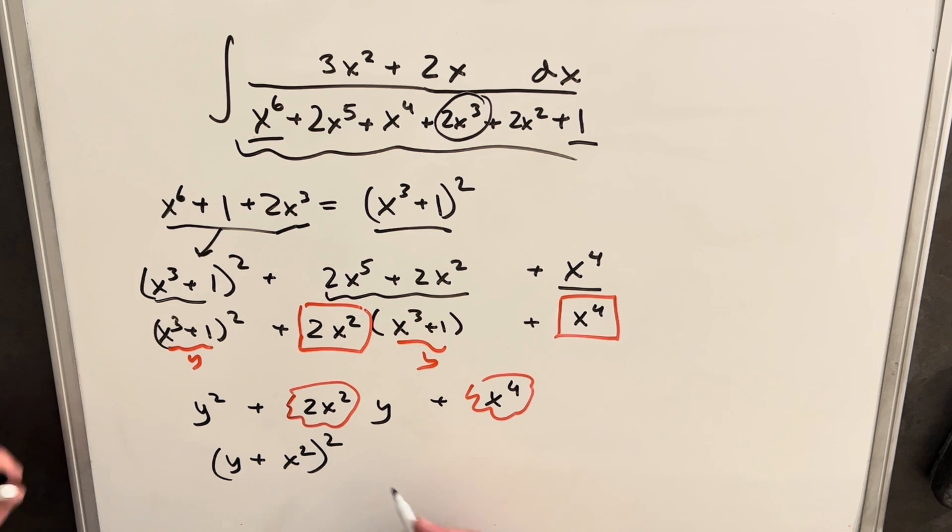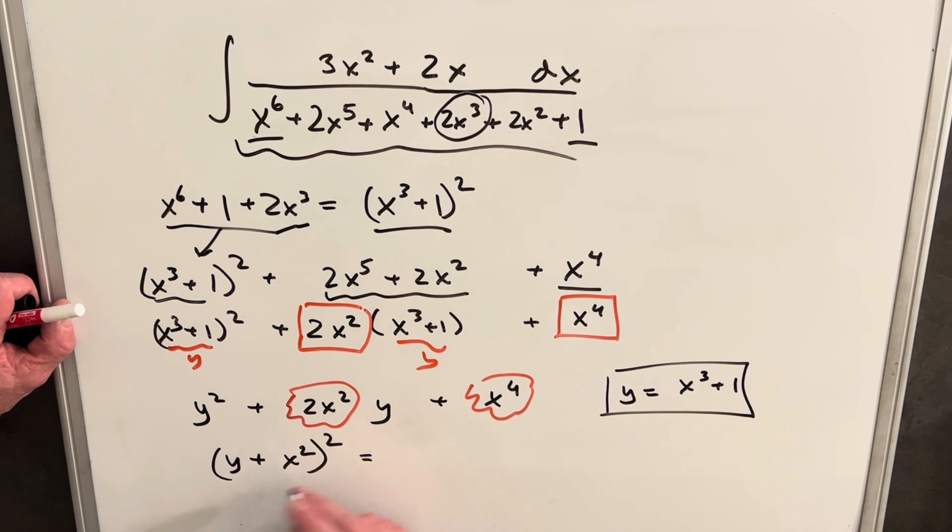So when you multiply that out, you're going to get, for the last term, x to the 4th, and with the inner terms, you're going to get a 2x squared y. And so now, putting back our y, we can have x cubed plus 1 plus x squared all squared. Now that that's all factored, I'm just going to put this back into our integral, and we'll continue.